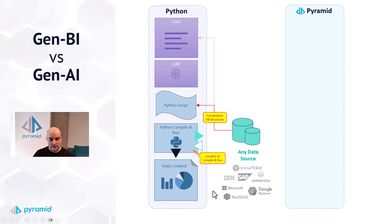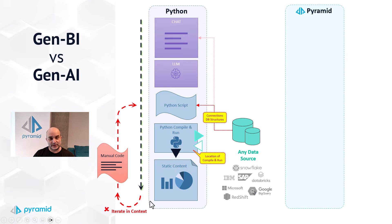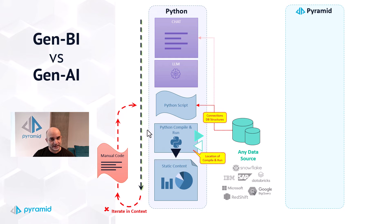The second headache is who is going to compile the Python code — where is it going to happen, and where is it going to run? And if you were happy with this pipeline, you're ultimately left with one of the biggest pain points: how are you going to iterate in context on your questions to ask follow-ups? The closest solution is probably injecting manual code back into the Python script and going through this loop over and over again. This completely kills the elegance of Gen AI — it's very programmatic and very hands-on.